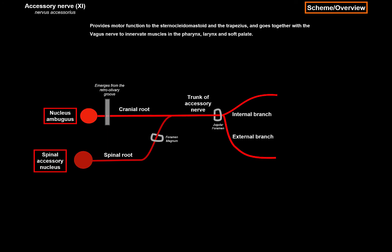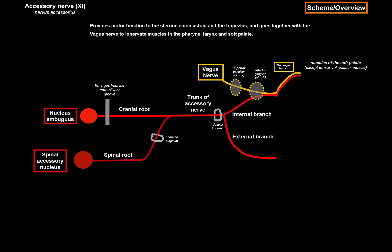If you remember from the previous video when we talked about the vagus nerve — the vagus nerve has a superior ganglion and an inferior ganglion. The accessory nerve is going to feed some motor fibers into the vagus nerve at the level of the inferior ganglion, and then go together with the pharyngeal branch to form the pharyngeal plexus, and further innervate the muscles of the soft palate — except the tensor veli palatini — and muscles of the pharynx, except the stylopharyngeus. And in some variations, the nerve might also go together with the recurrent laryngeal nerve to help innervate the intrinsic muscles of the larynx.